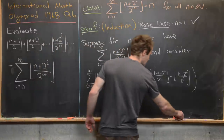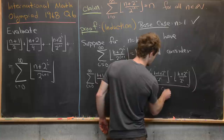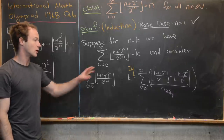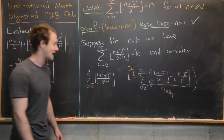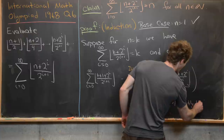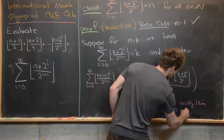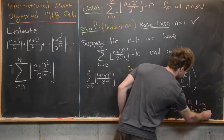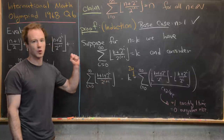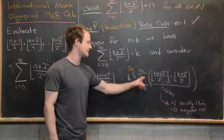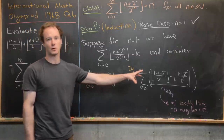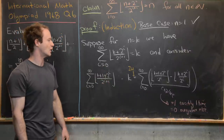We can rewrite this as the sum of the difference: floor of (k+1+2^i)/2^(i+1) minus floor of (k+2^i)/2^(i+1). What you'll find is that this term equals 1 exactly once and equals 0 everywhere else. If that's true, then the infinite sum collapses to a single 1, making the k+1 case equal to k+1.